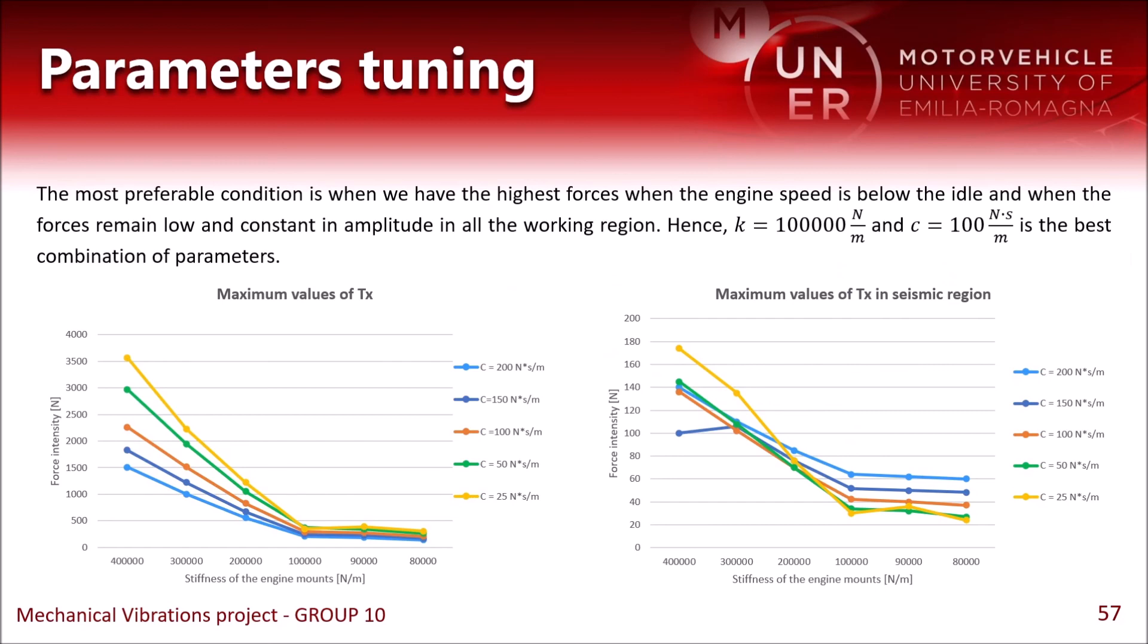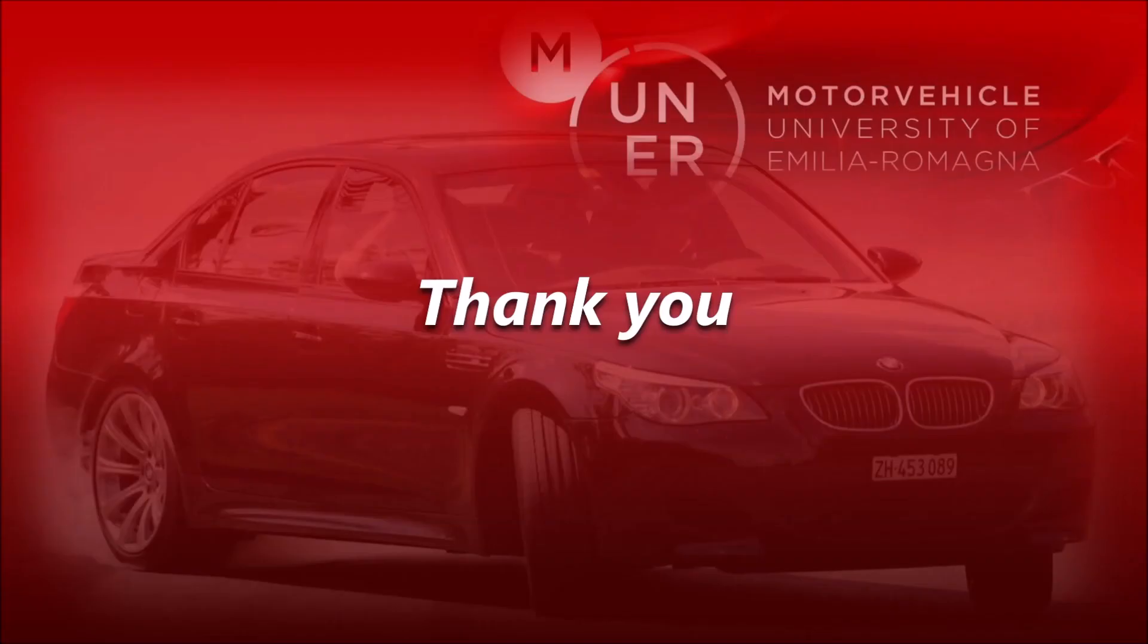Then we move on to choosing a value for the damping coefficient. If the damping is too high, we will have a higher force in the seismic region of the speed ramp, so in the working condition of the engine. But at the same time, if the damping is too low, we are going to have even higher force during the initial transient, the initial part of the simulation. So as a compromise between these two results, we chose 100 Ns per meter for the damping coefficient. Thank you for watching.